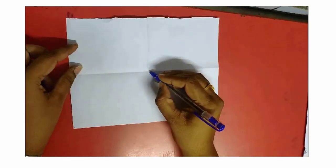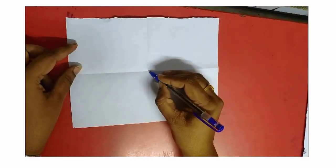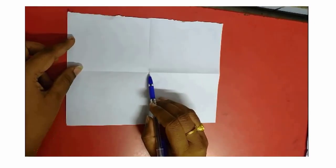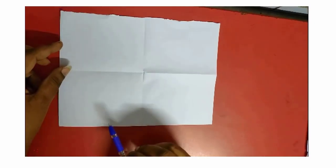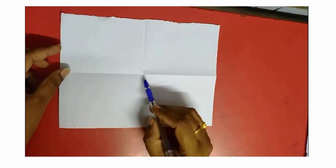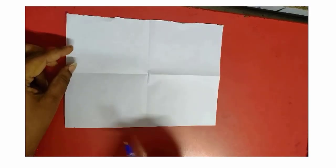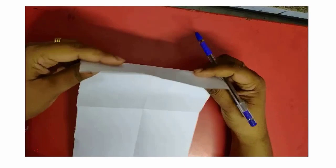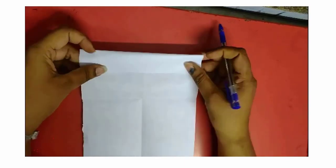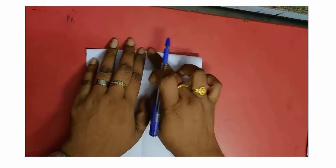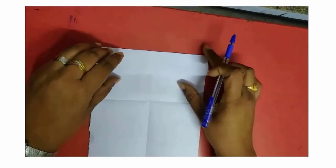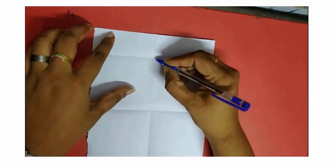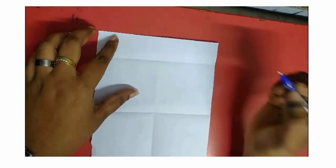What is this? This location is called a point. That means this point doesn't have any size. Now fold it on the other side of the paper. This location is also called a point.